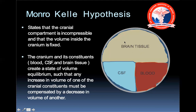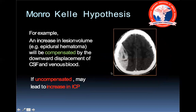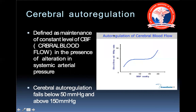When brain tissue volume is decreasing, brain matter is getting compressed, and when blood volume is decreasing, cerebral perfusion pressure is reducing. For example, an increase in lesion volume such as in an epidural hematoma will be compensated by downward displacement of CSF and venous blood. If uncompensated, it may lead to an increase in intracranial pressure.